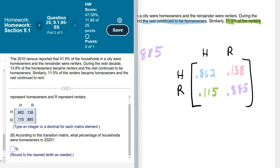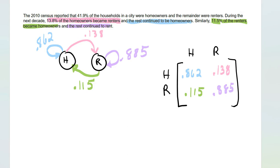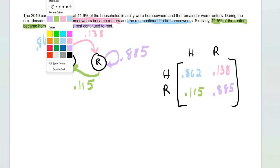Then it says, according to this transition matrix, what percent of households were homeowners in 2020? Let me go back to this. In 2010, let me go with bright yellow here.